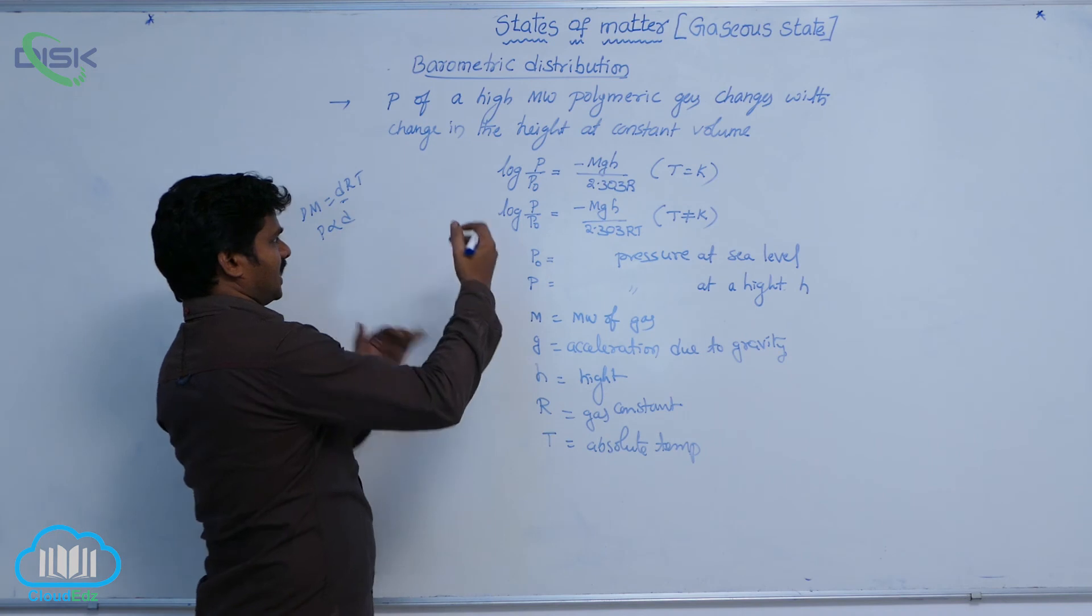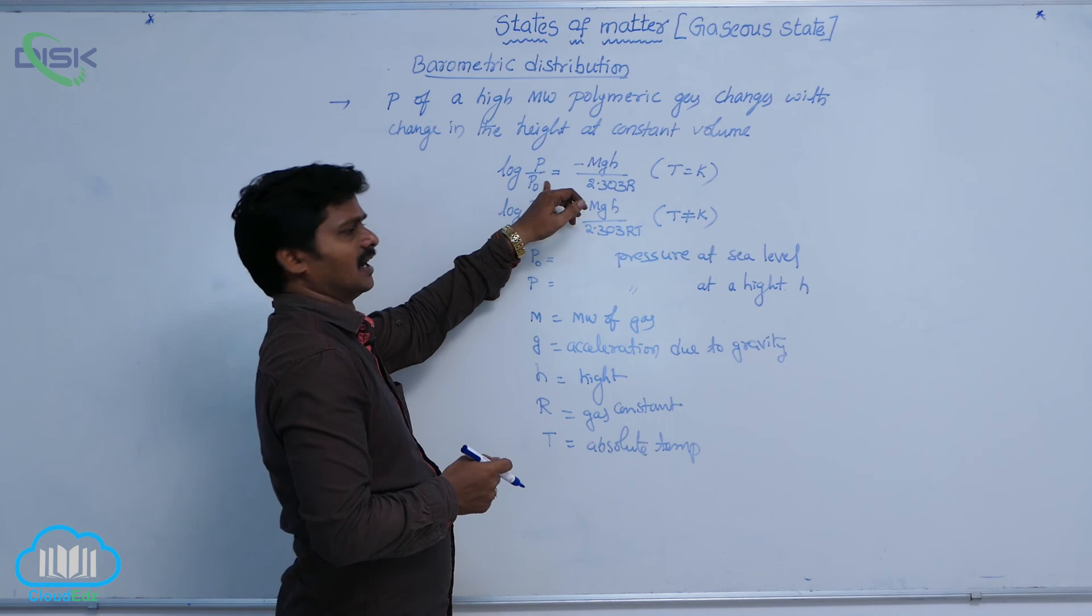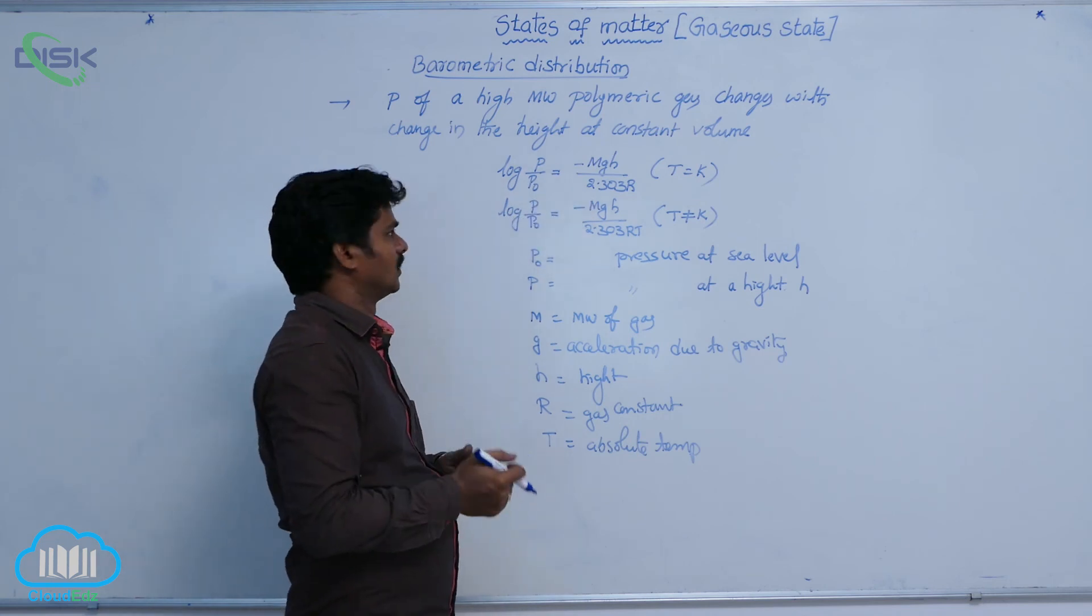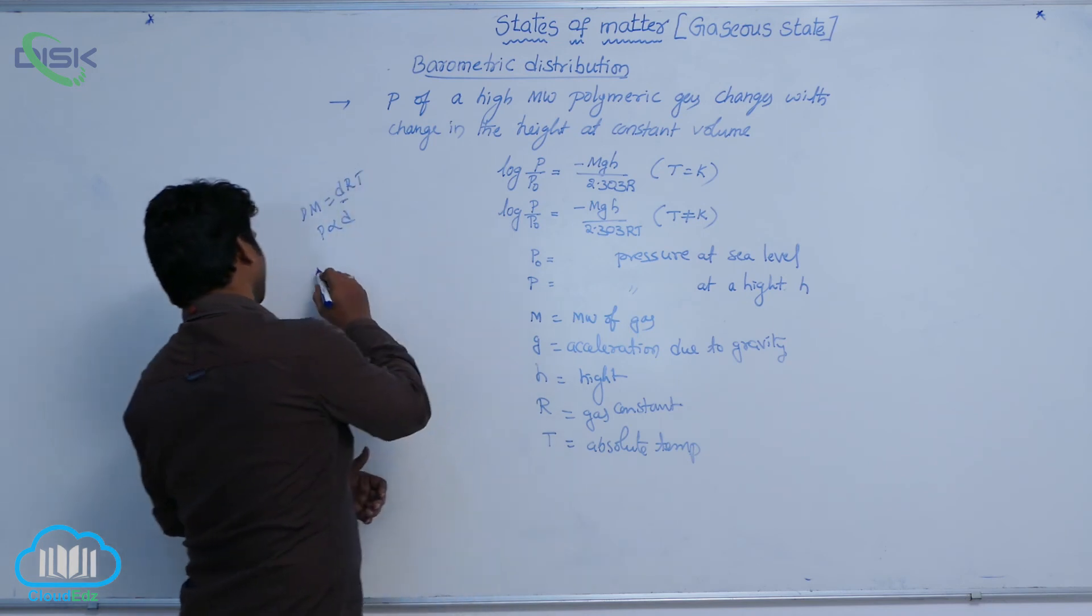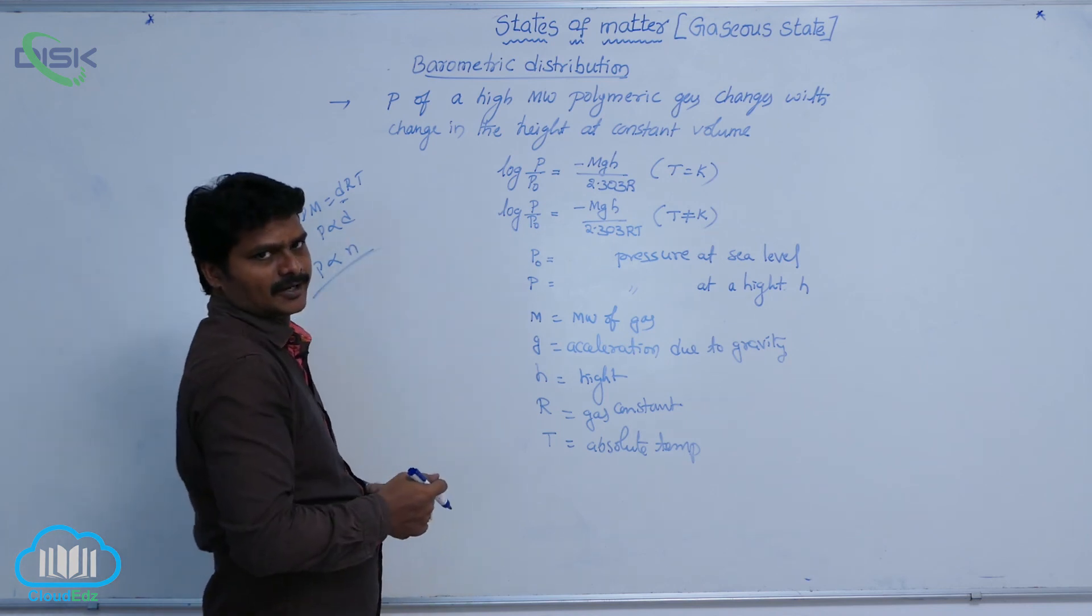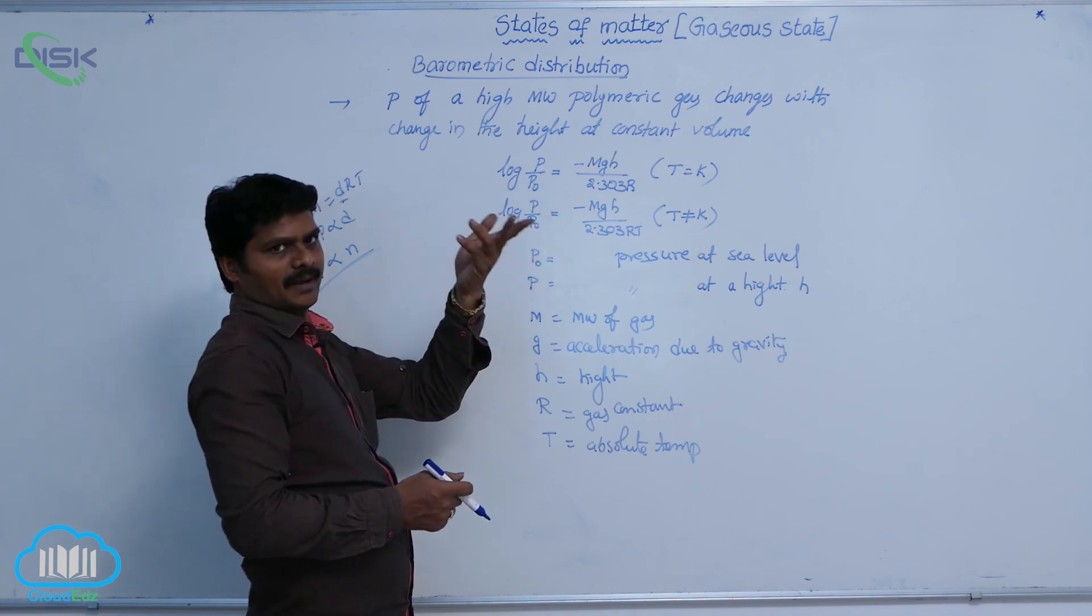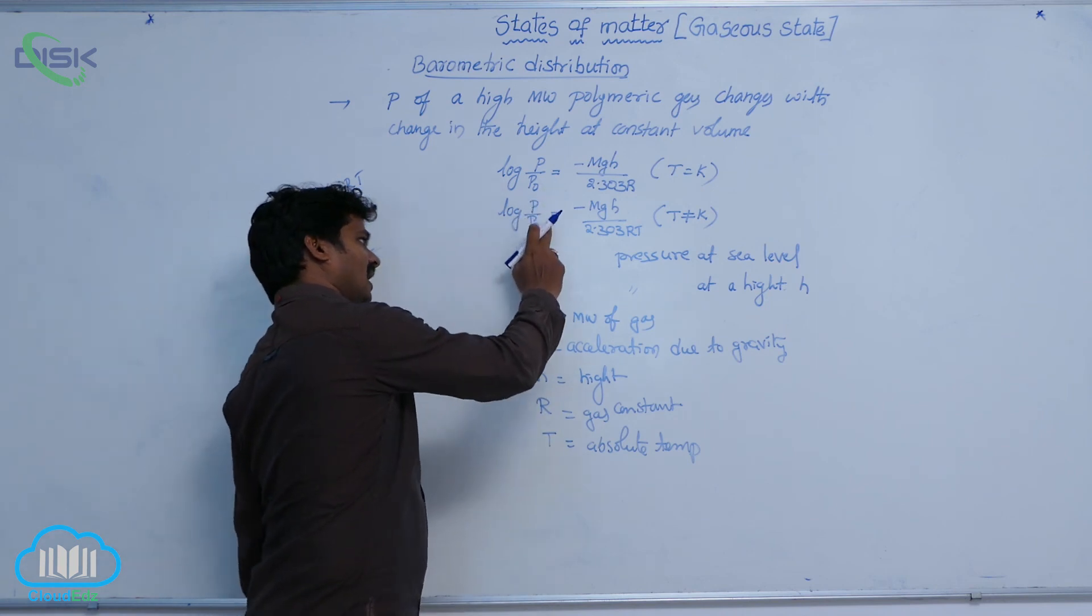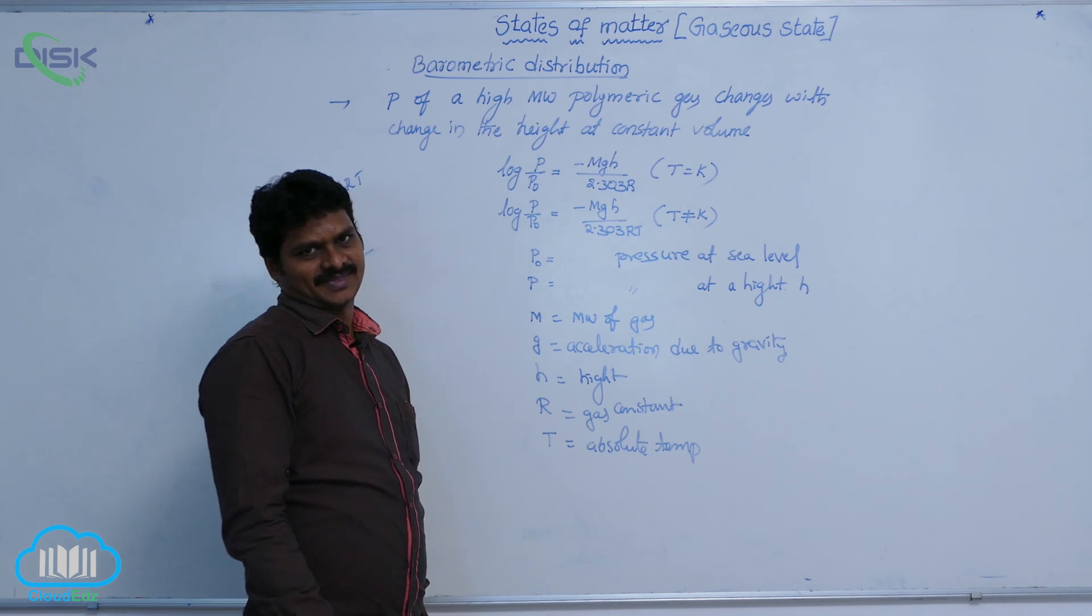That is why we can replace these terms by densities also, D by D naught. D is density at high altitude, whereas D naught is the density at sea level. Similarly, as P is directly proportional to N, number of moles at constant volume, we can replace P by N, P naught by N naught. That means log of N by N naught equal to MGH by 2.303 RT. That is another relation.